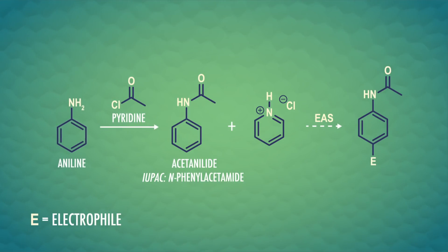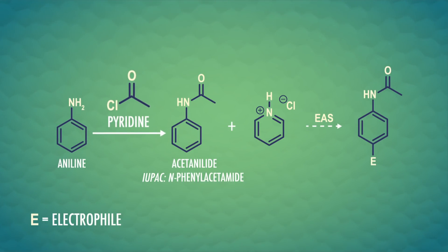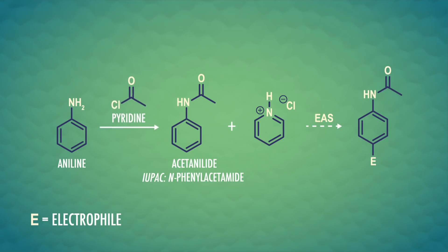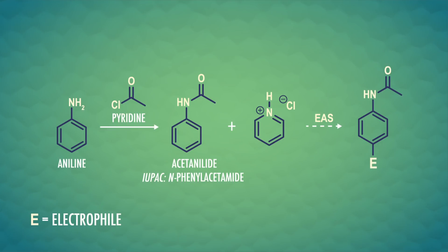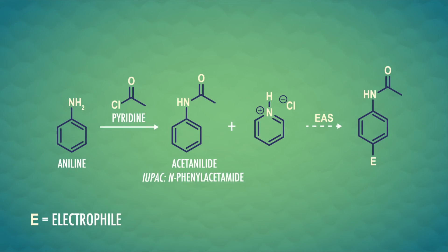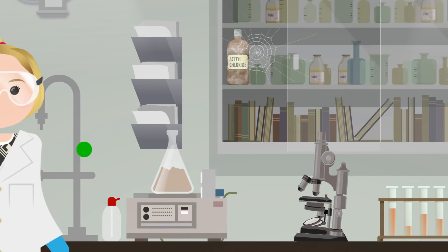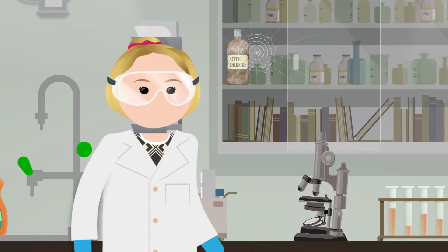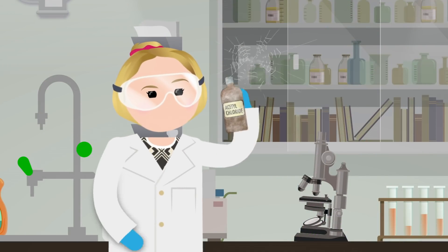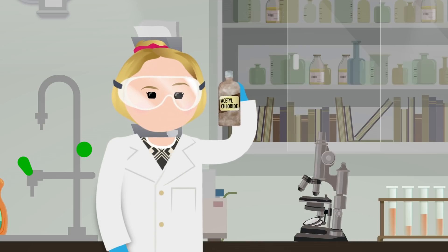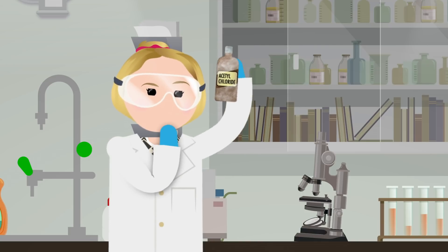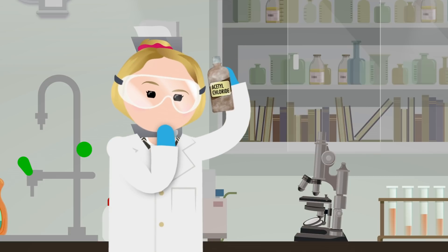We start with aniline, which is a benzene ring with an NH2 group. By adding a somewhat bulky and easily removable acetyl group to the nitrogen, we block access to the adjacent ortho position, and we can add an electrophile to just the para position. One way to acetylate our aniline is using acetyl chloride and pyridine as a base to accept the proton on the NH2 group. But suppose our chemist heads to the chemical shelf and only finds a really old bottle — acid chlorides are very reactive, so will this old bottle still do the trick?